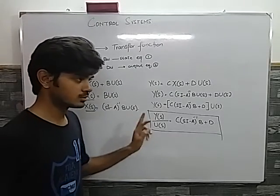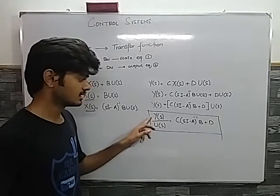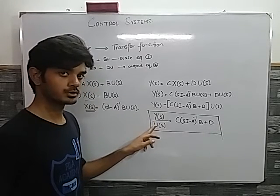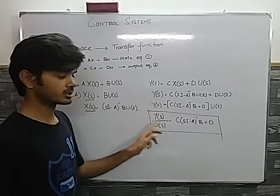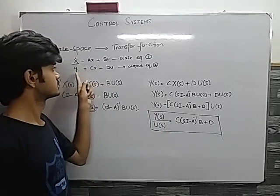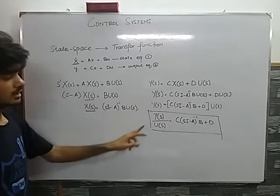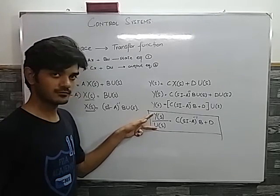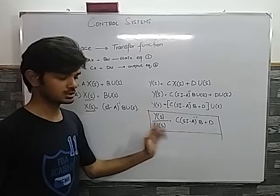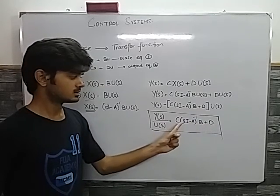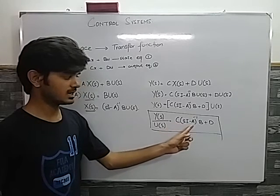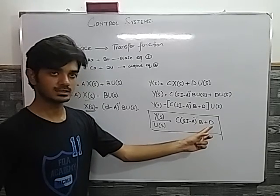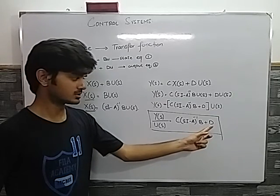We know that the definition of a transfer function is the Laplace transform of the output divided by the Laplace transform of the input. Since Y(s) is the Laplace transform of the output and U(s) is the Laplace transform of the input, Y(s)/U(s) is indeed the transfer function. In this formula, C is the output matrix, A is the system matrix, B is the input matrix, and D is the feedback matrix.